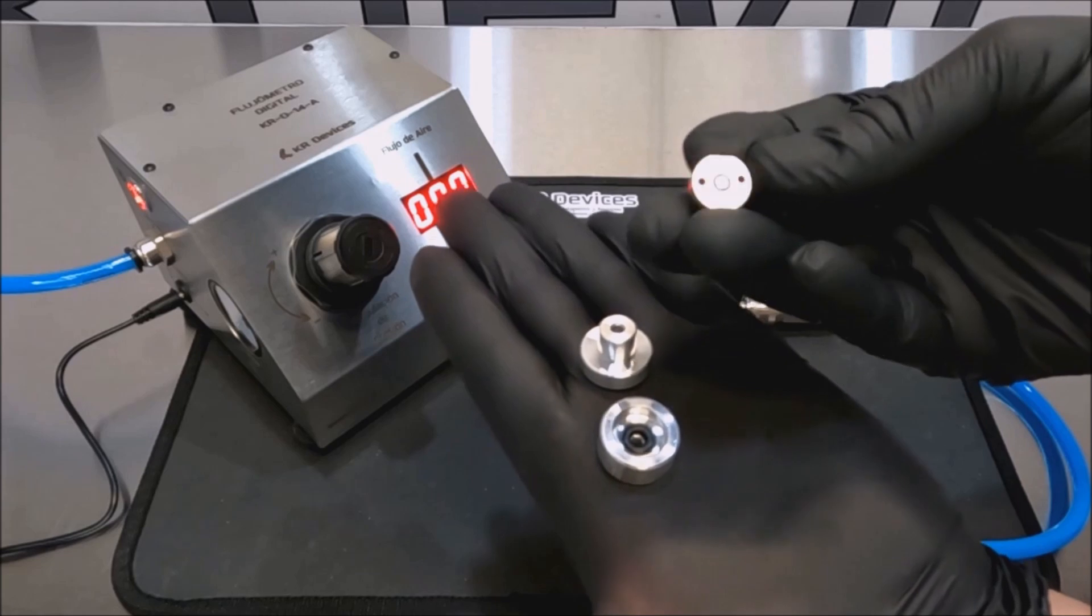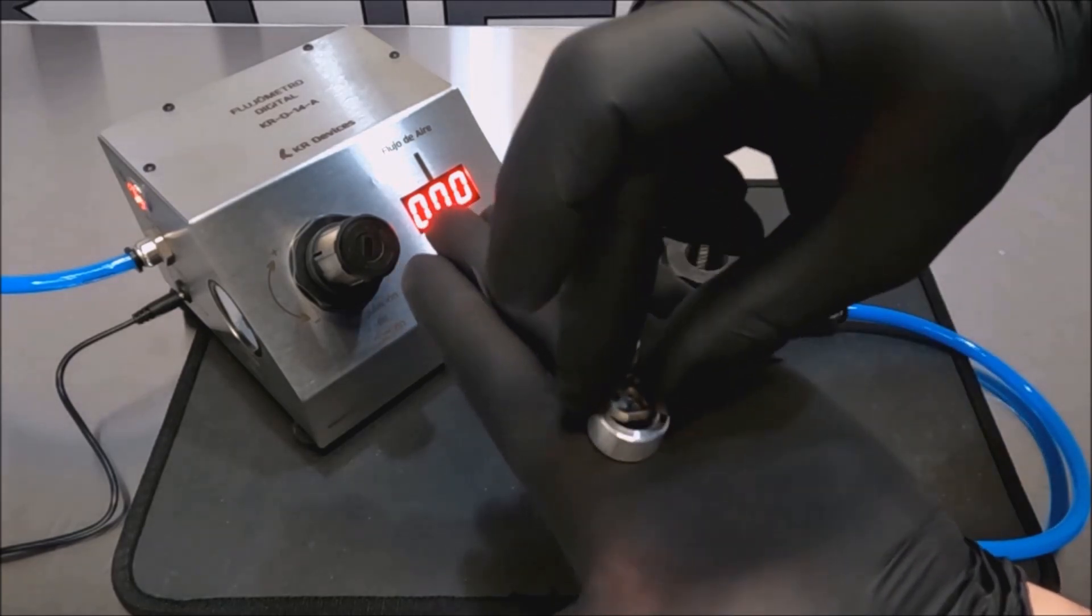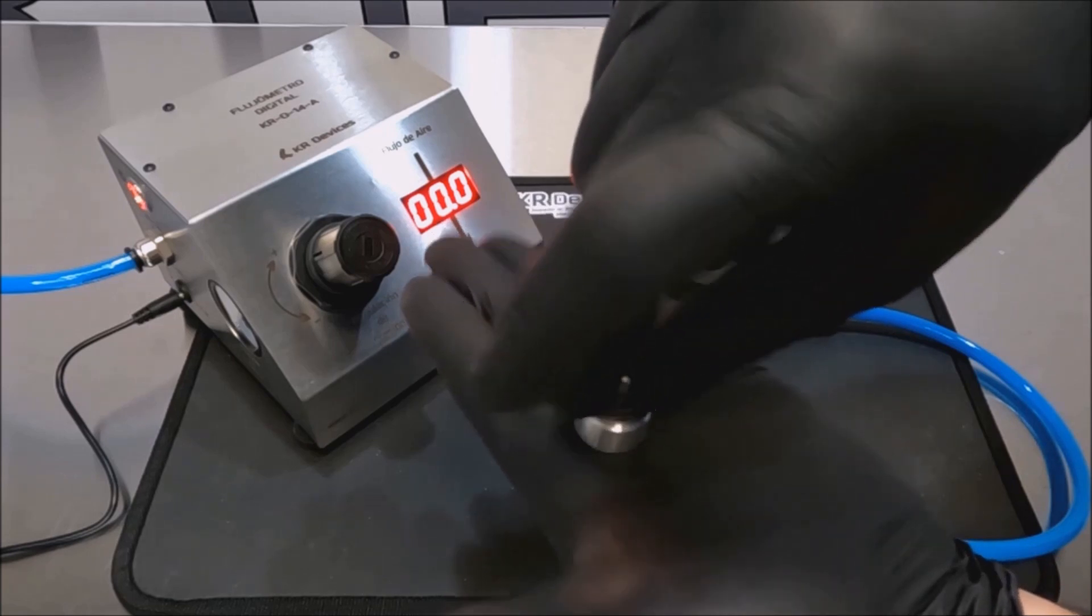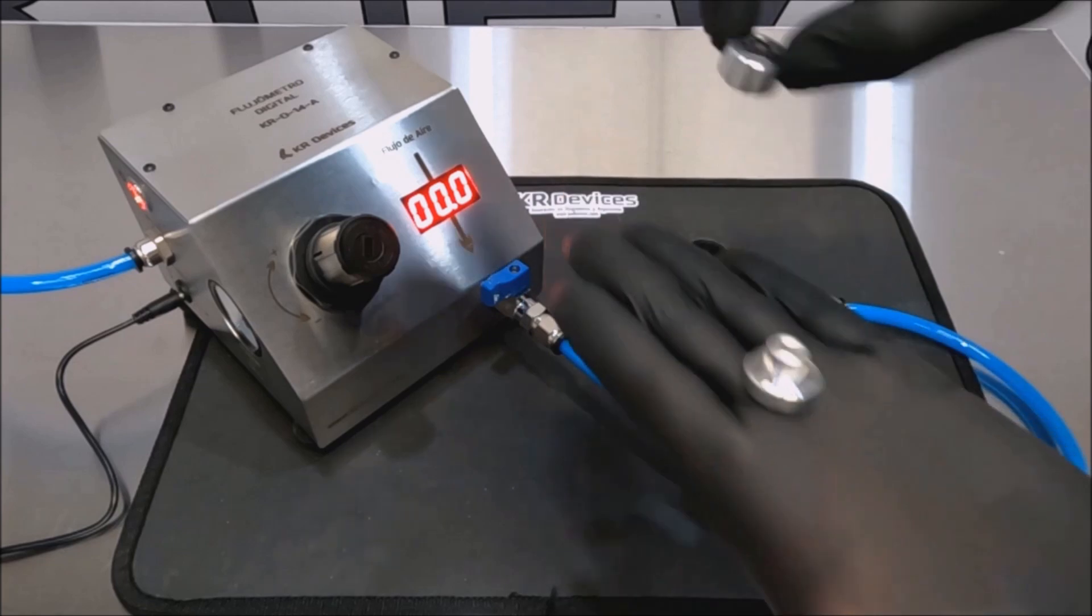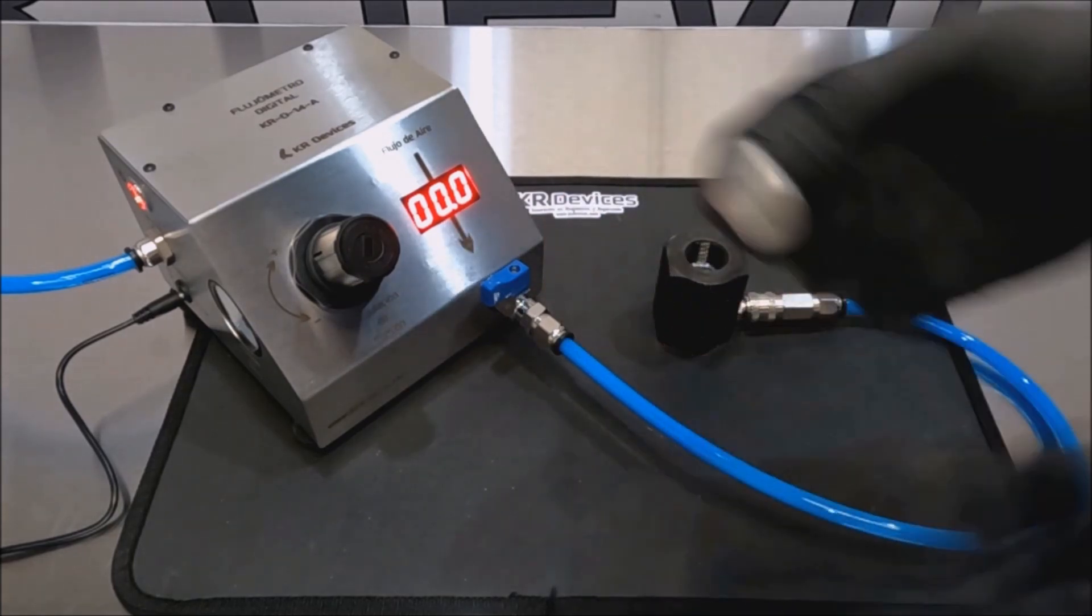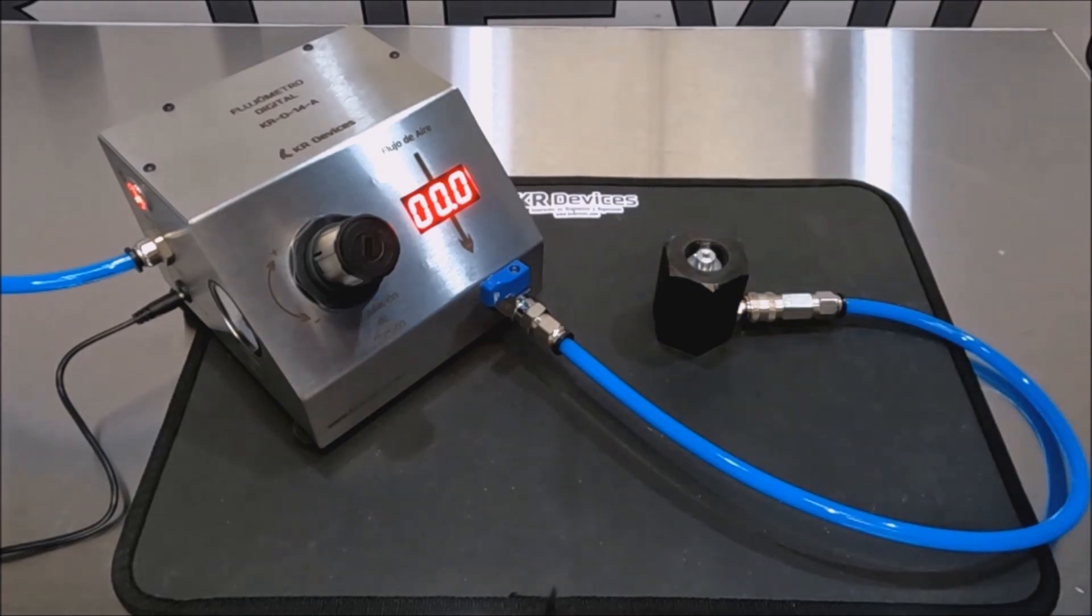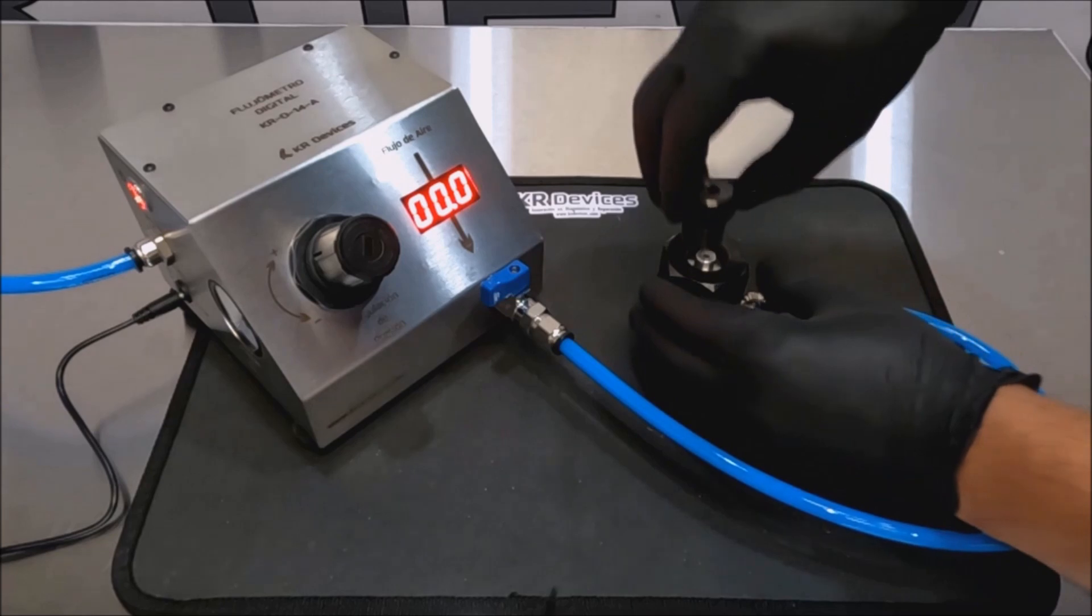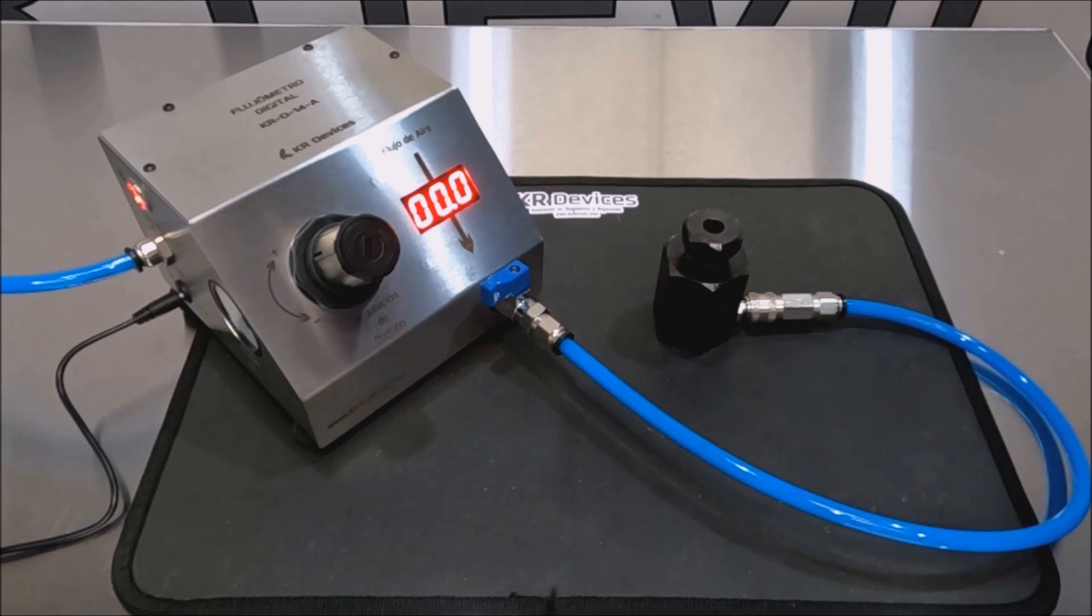The valve is placed in this accessory, paying attention to its orientation. It is then placed in the adapter and screwed into place. Then we proceed to open the outlet valve to obtain the measurement.